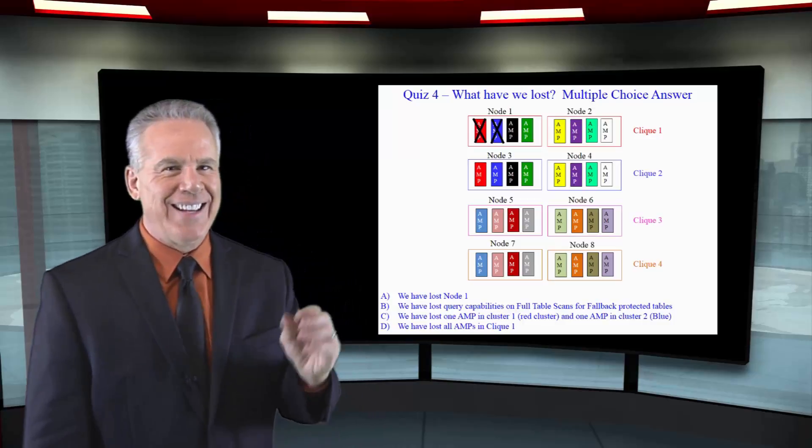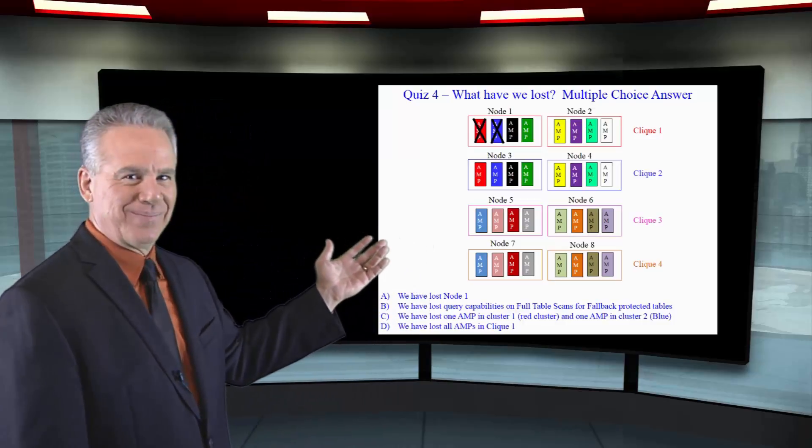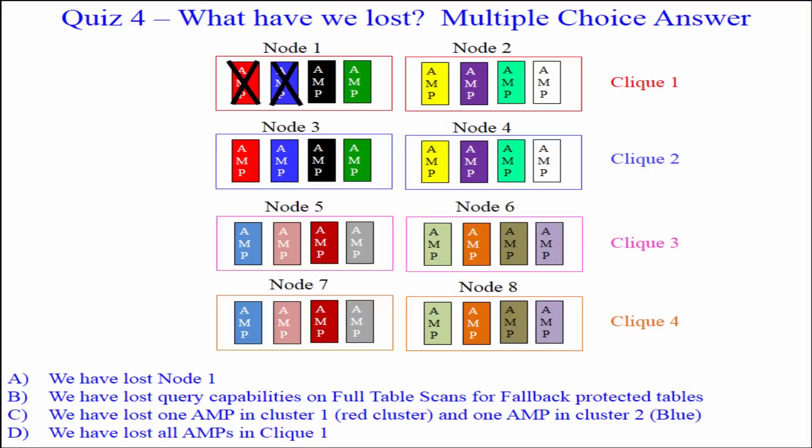What have we lost in this picture? Is it A: We have lost node 1. B: We have lost query capabilities on full table scans for fallback protected tables. Answer C: We have lost one AMP in cluster 1 and one AMP in cluster 2. Or D: We have lost all AMPs in clique 1.